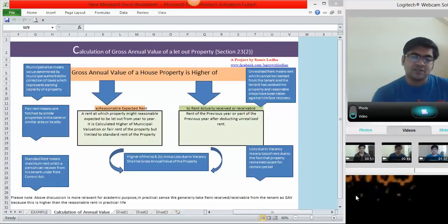Fair rent means a rent which can be fetched by the properties similar to your property in your locality or the area around your property. So, let us say I am residing in Andheri. So, whatever other properties in my neighbourhood are getting, what rent they are getting can be considered as fair rent for my property.